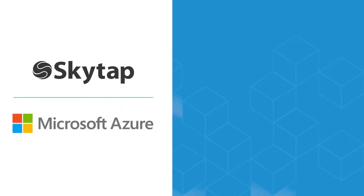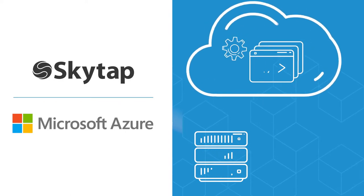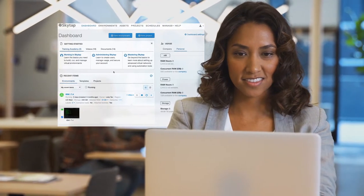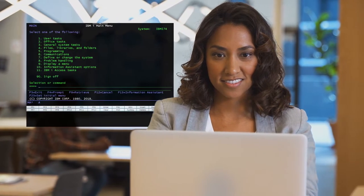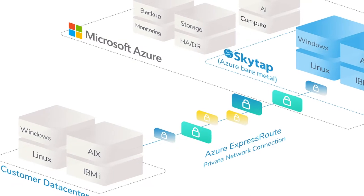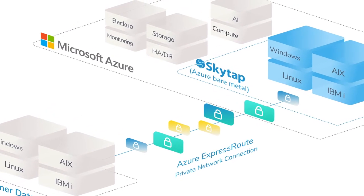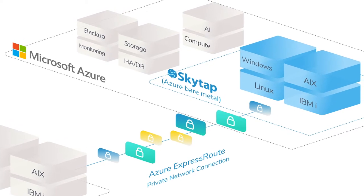Microsoft and SkyTap have partnered to eliminate the friction of moving your IBM power workloads to the cloud. With SkyTap on Microsoft Azure, there's no need to rewrite or replatform the traditional applications that form the backbone of your business running on IBM i, AIX, Linux, or Windows, giving you more flexibility to modernize and maximize your investment in Azure.